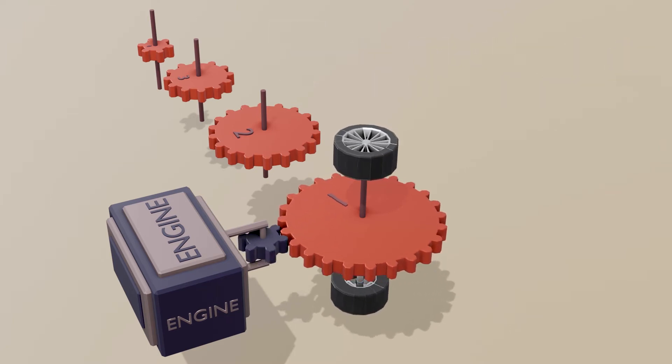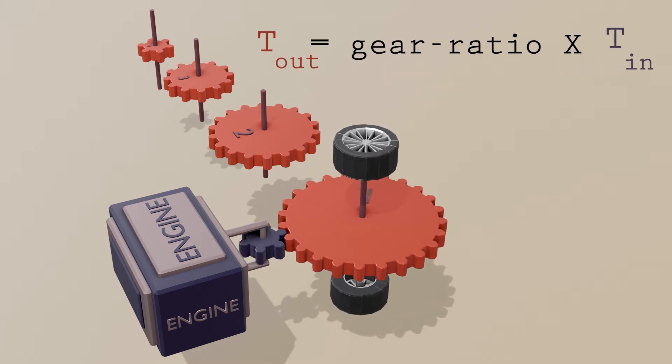When you connect a bigger gear to a smaller one, the output torque we get on the bigger gear will be more than the input torque we applied through the smaller one. How much the torque gets amplified depends on the gear ratio.